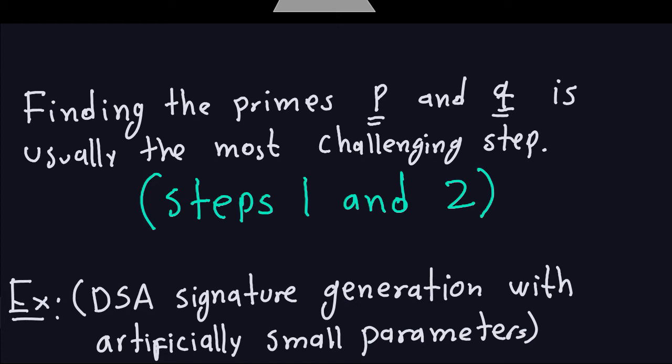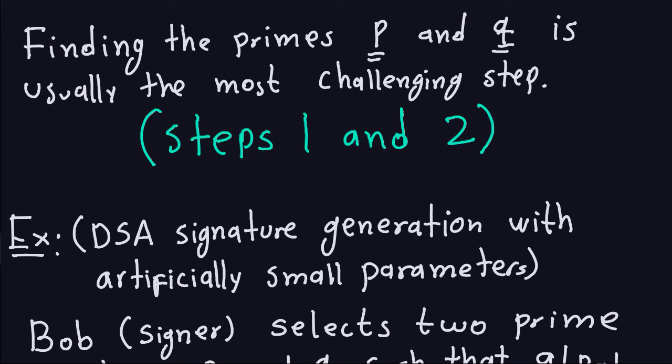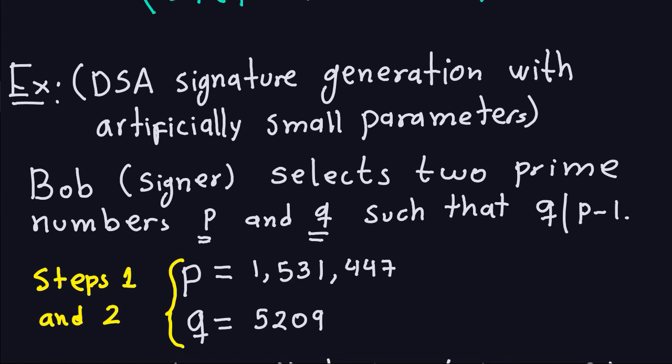Before working through a realistic example — which requires large numbers since P must be 1024 bits — let me give an example with artificially small numbers. This simplified example is called the DSA key generation with artificially small numbers. In real life you would not select such small numbers for a digital signature algorithm.